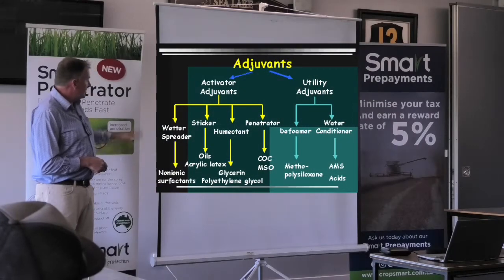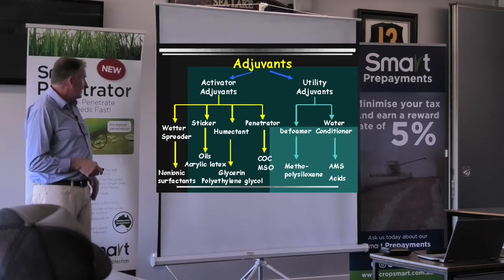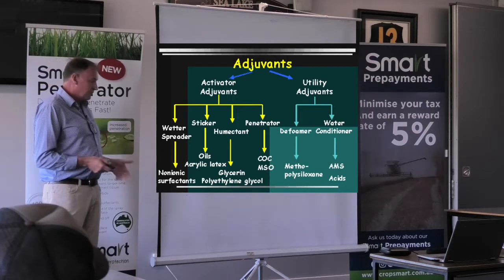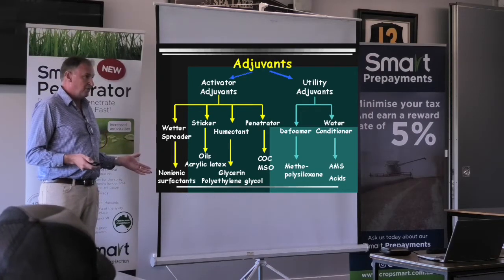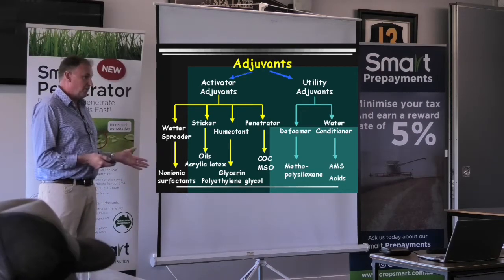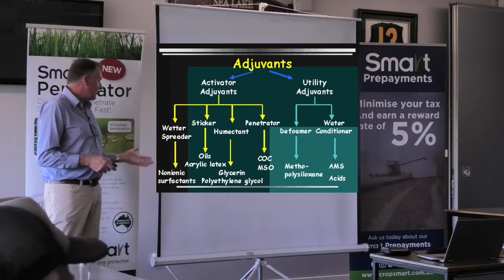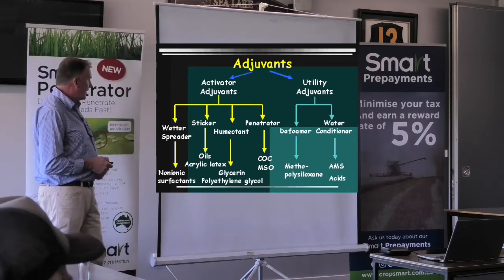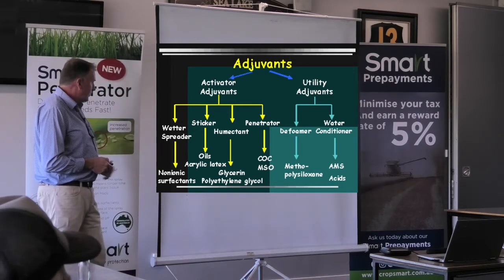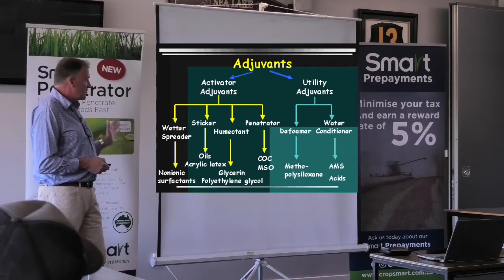In terms of generalities with adjuvants, adjuvants are obviously anything that has an effect on the plant when it's used with a pesticide in some fashion — whether it be wetters, stickers, humectants, or anything that has an effect on antidrift.